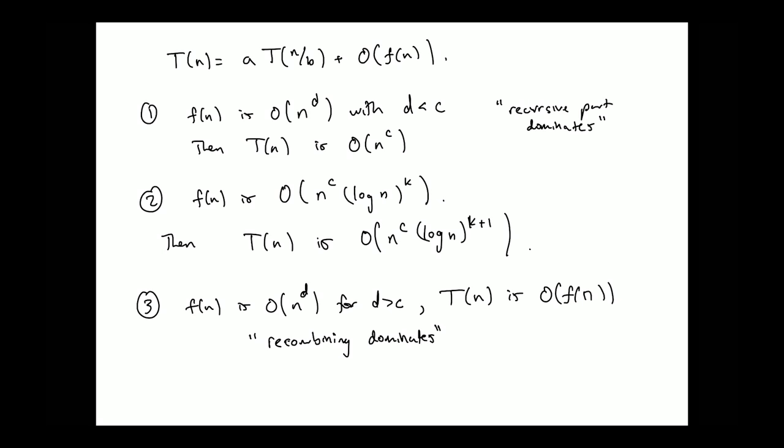The rough way to think about this: the recursive part could be the really hard part, the recombining part could be the hard part, or they could be on similar levels — that's case 2. This fundamentally is the Master Theorem: if we have a recurrence relation of that form and know something about the f of n term, we can conclude something about what T of n looks like.